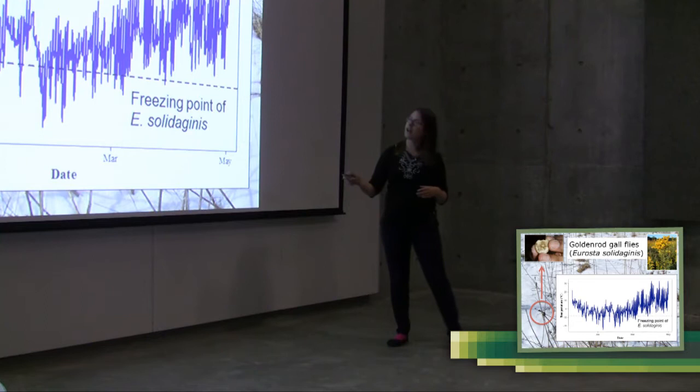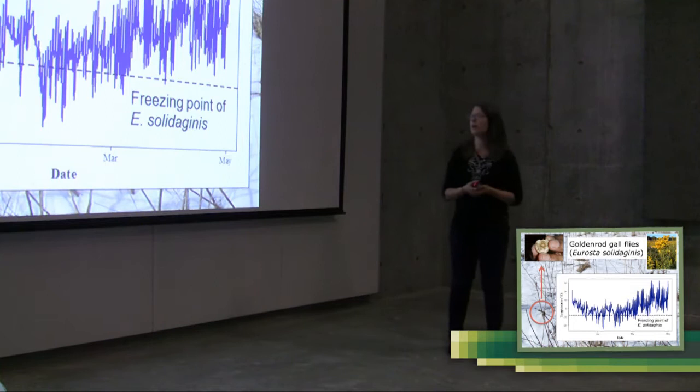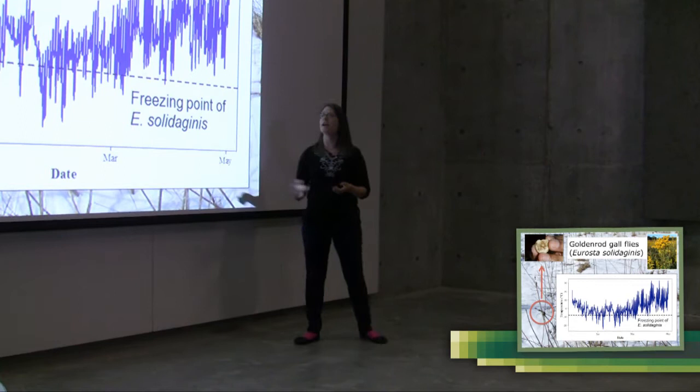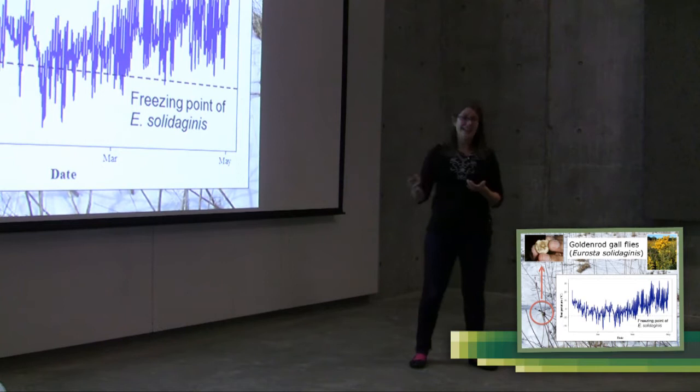So here, this is that air temperature in Ontario over the course of the winter. It gets pretty cold down below minus 20 degrees Celsius several times. So it's pretty normal for southern Ontario. And what I've done is I've plotted on here the freezing point of this fly. And what you should be able to see is that the fly freezes and thaws several times over the course of that winter.